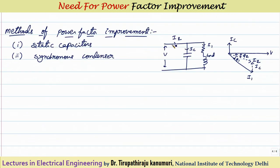How can power factor be improved? Consider a load with current I1 at power factor angle phi1. Installing a capacitor in parallel draws a current IC that leads the voltage by 90 degrees. The total current from the supply becomes I1 plus IC, and the resultant current shifts upward — the power factor angle decreases and power factor is improved. There are two methods: static capacitors or a synchronous condenser, each with their own advantages and disadvantages, which will be discussed in the coming lectures. I hope the need for power factor improvement is now completely clear.